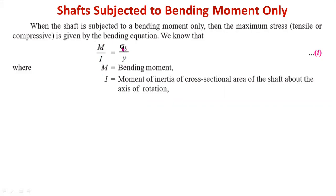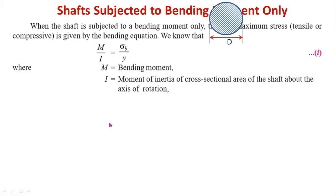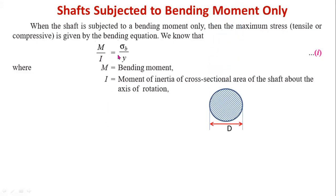σ_B is the bending stress — tensile or compressive. Y is the distance from the centroid or center of the shaft to the outer surface. From this equation, σ_B = M·Y/I = M/Z, where Z = I/Y is the section modulus.